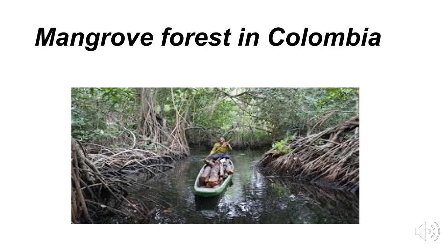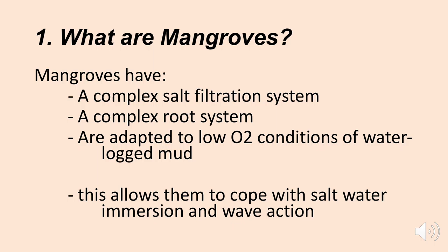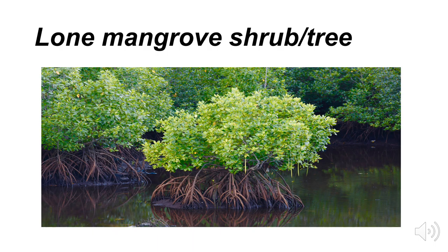Here's a picture of a guy in a boat going through a mangrove forest in the country of Colombia. Mangroves have some unique things about them that are very important for the ocean and for the land. They have a complex salt filtration system, a very complex root system, and they're adapted to the low oxygen conditions of the mud they grow in. This allows them to cope with salt water immersion and with the wave action seen in coastal areas.